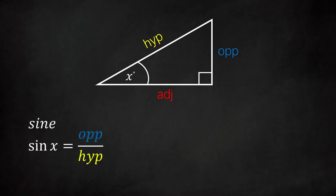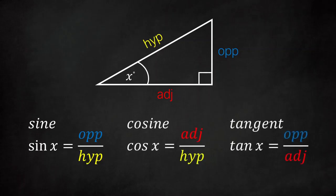The trigonometric functions are defined as follows: the sine function, sin x, is opposite over the hypotenuse. The cosine function, cos x, is adjacent over the hypotenuse. And the tangent function, tan x, is opposite over the adjacent.